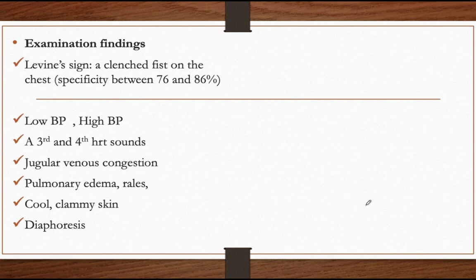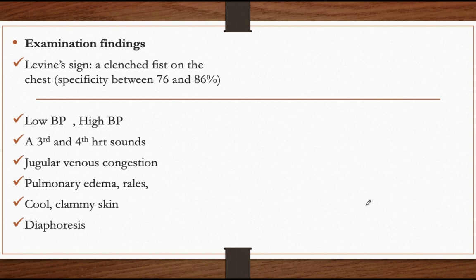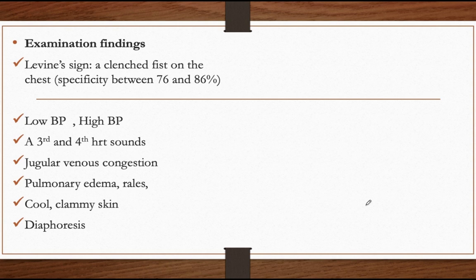On the pulmonary examination, pulmonary edema and signs of left ventricular failure may be found. Because the ischemic left ventricle cannot pump effectively, blood backs up into the pulmonary veins and lungs, causing dyspnea. Auscultation may reveal rales and crackles, suggesting left ventricular dysfunction or mitral regurgitation. On the skin, diaphoresis with cold and clammy skin may be present, suggesting impending cardiogenic shock.